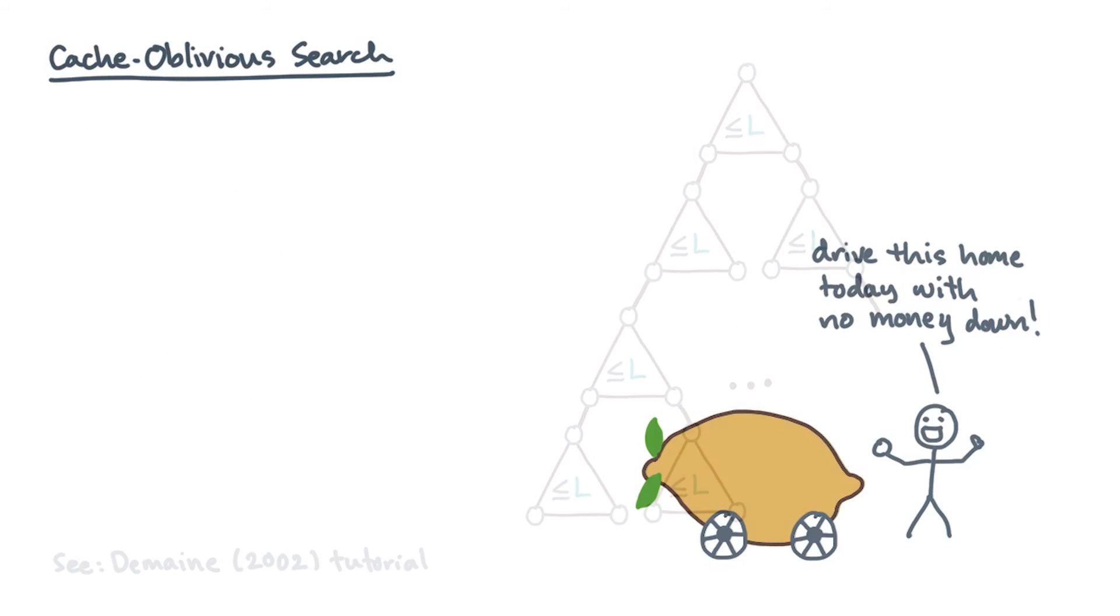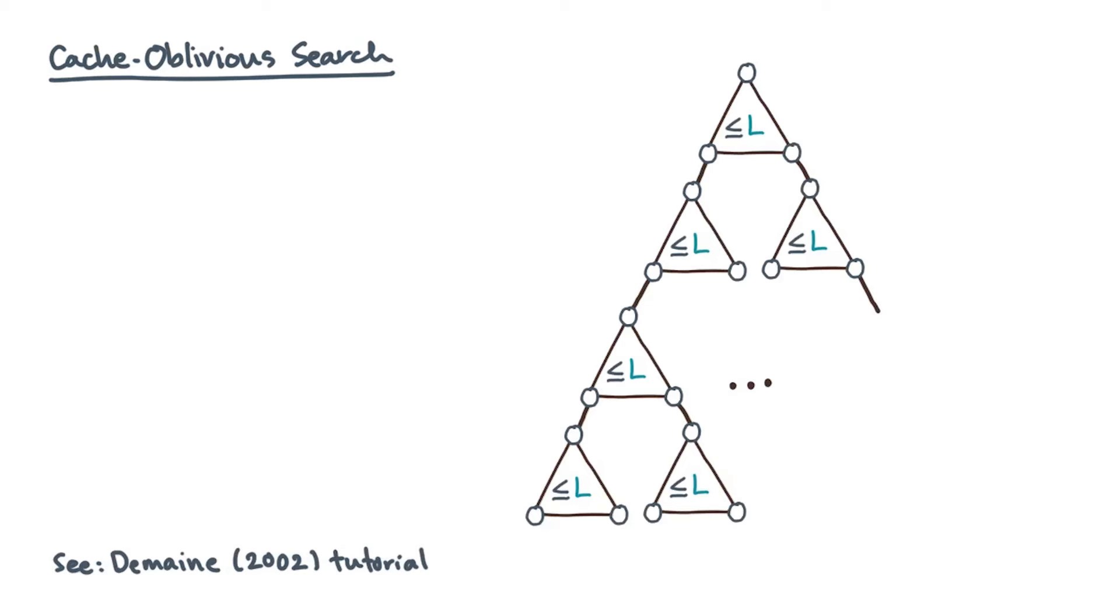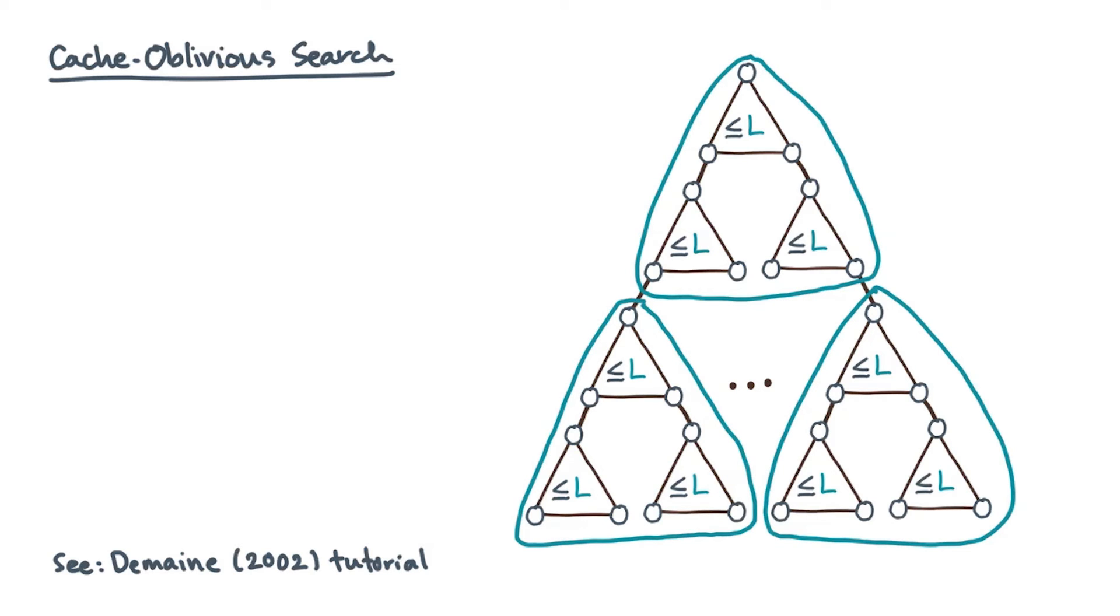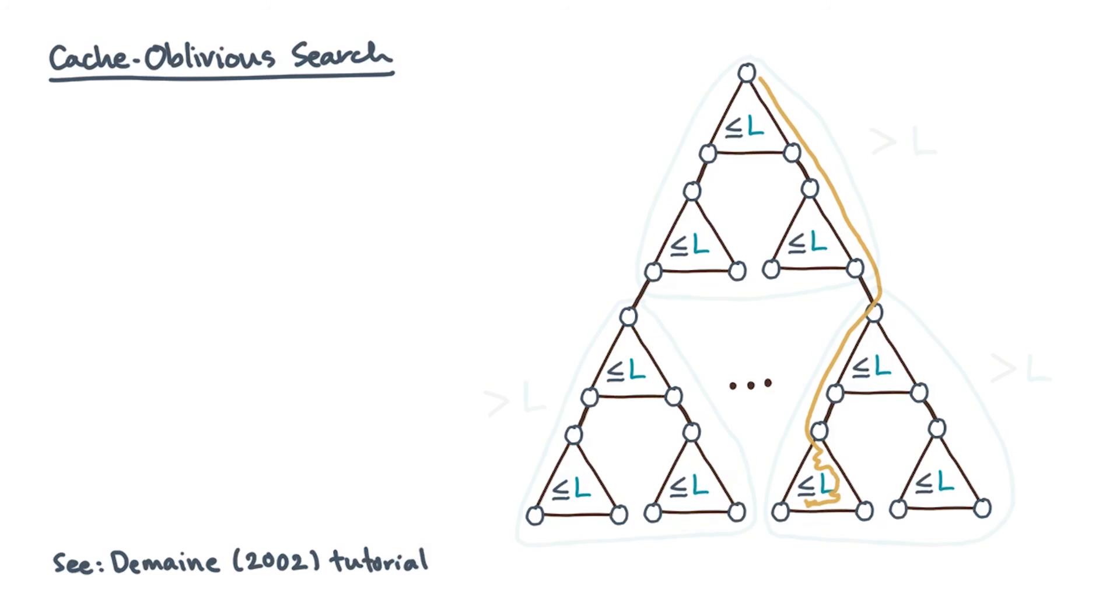So what does this buy you? Let's zoom in on the tree, looking at the point where the subtrees fit within cache lines. That is, in the figure, the elements in each of the smallest subtrees shown fit within a cache line size l. A binary search in this tree takes some path from the root to the leaf. Since the subtrees are of size l, you only generate a cache miss when you hit the root of one of the subtrees.